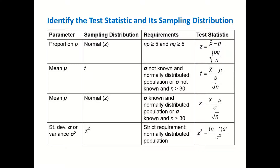We use the H-naught value — we assume that H-naught is true and use that value. The formula divides by the square root of p times q divided by n.